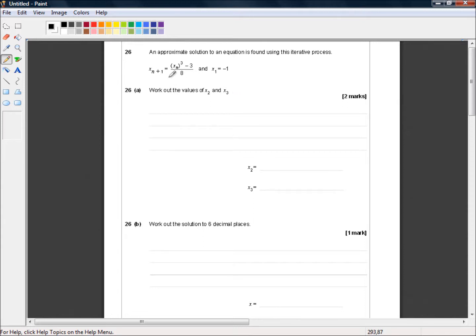Well that's very simple. We just put the information into this equation and we are allowed to use a calculator. So we start with x sub n plus 1 which will be x2, which is equal to... Now x sub n is x1 which we're already told in the question is minus 1.